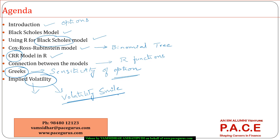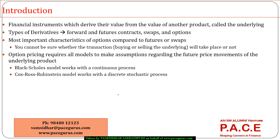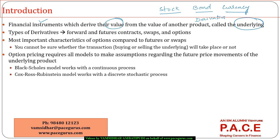Getting into a basic introduction to the world of derivatives: they are financial instruments which derive their value from the value of the underlying. The underlying can be a stock, a bond, a currency, or various other asset classes. A derivative is not an independent product — its value is derived from another existing product. There are four major forms of derivatives: forwards, futures, swaps, and options.